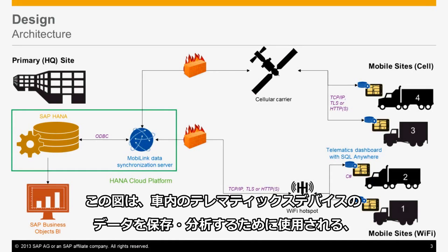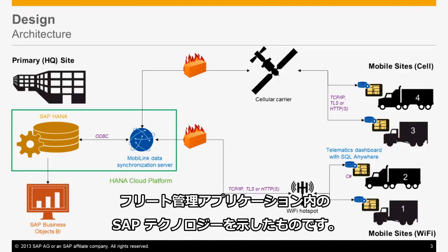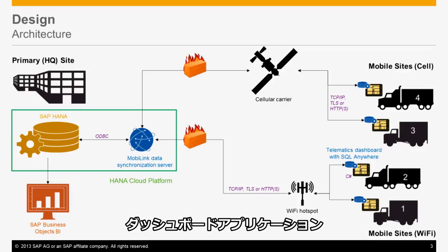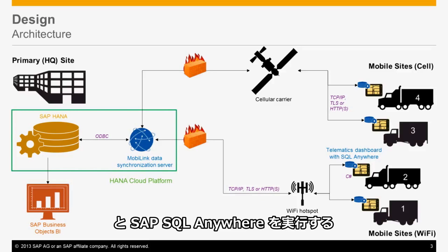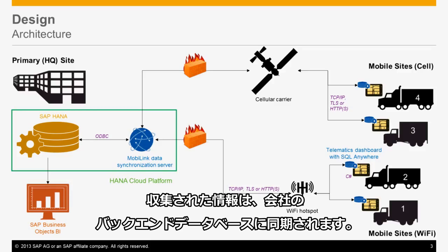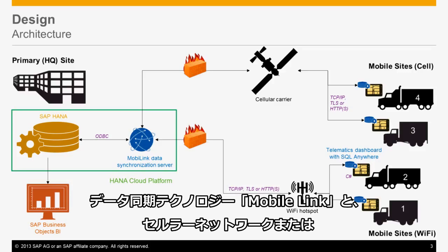Here is an architectural diagram showing the SAP technologies within the fleet management application used to store and analyze the data from the telematics device within the vehicle. Each vehicle in the fleet has a vehicle tracking device collecting information through multiple sensors on board. There is also a laptop or tablet that has a dashboard application and SAP SQL Anywhere running on it. The information captured in the SQL Anywhere remote database is then synchronized to the backend database at the corporate site. This is accomplished through MobileLink, the data sync technology included in SQL Anywhere, and the choice of a cellular carrier or a WiFi hotspot.